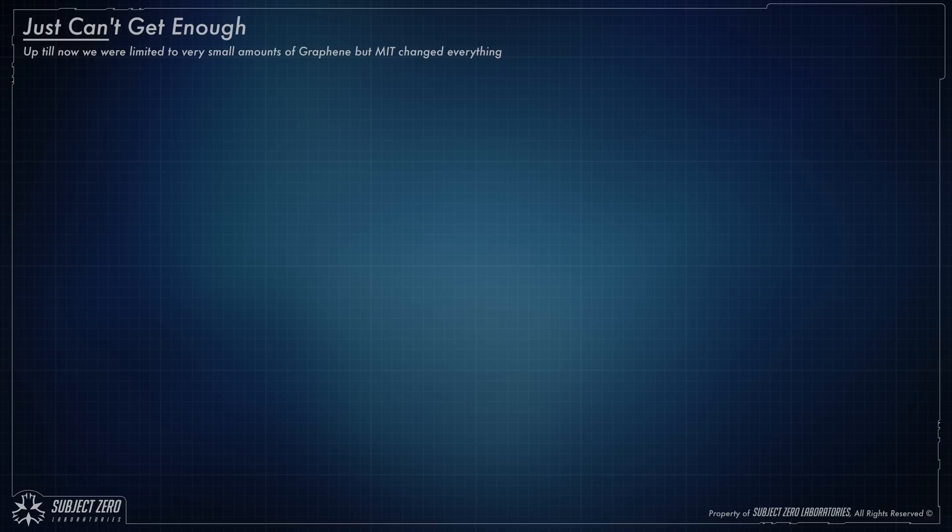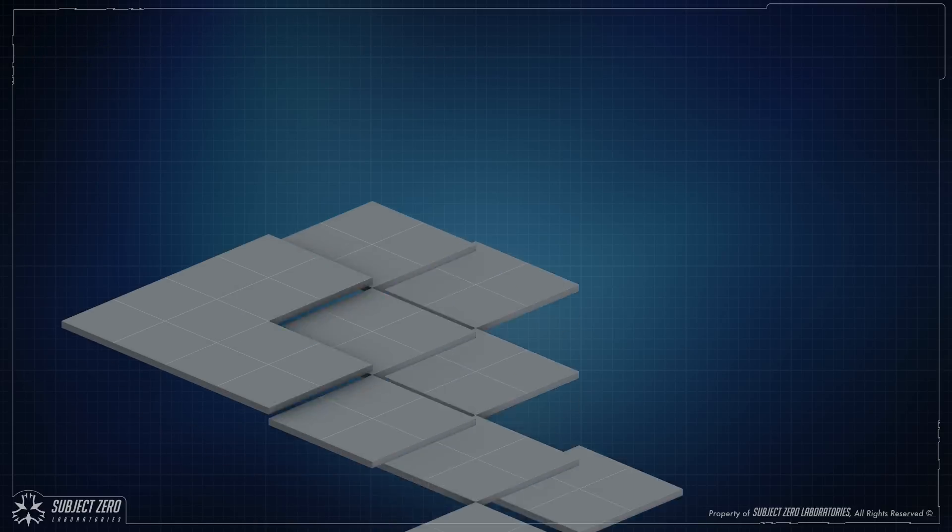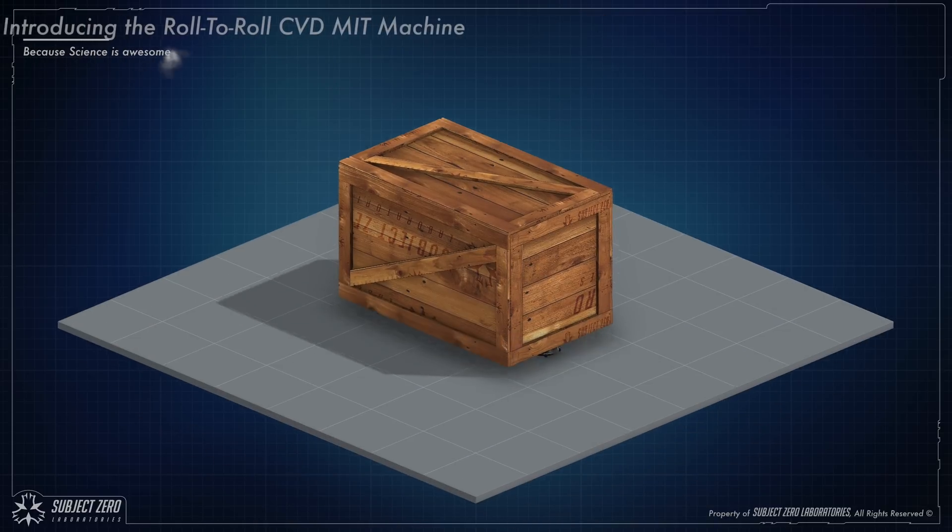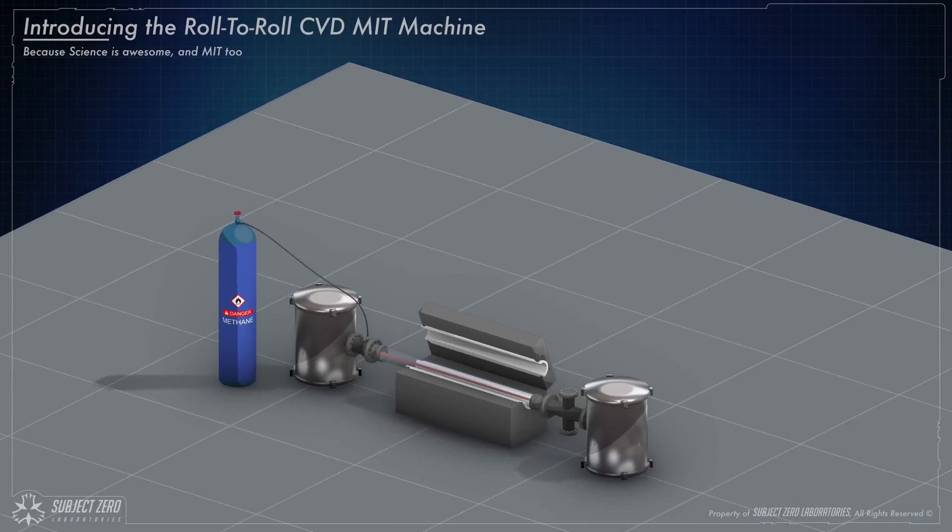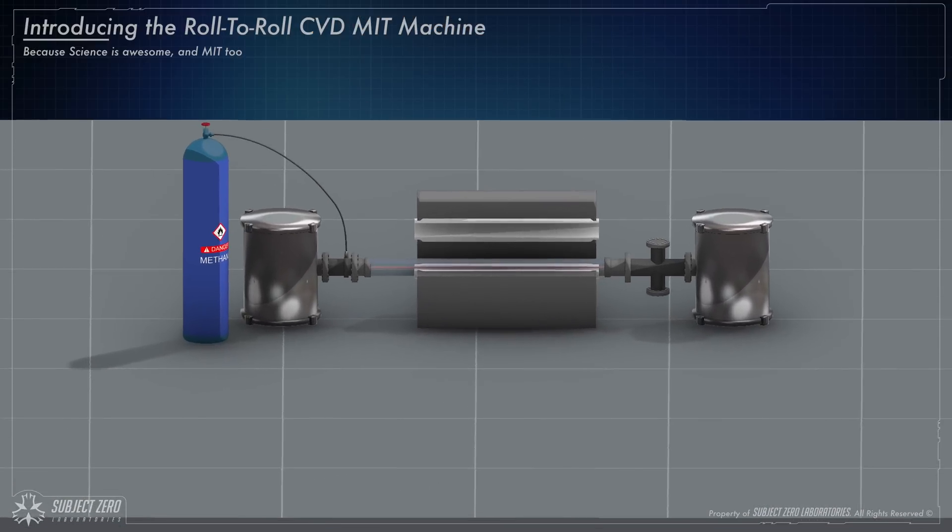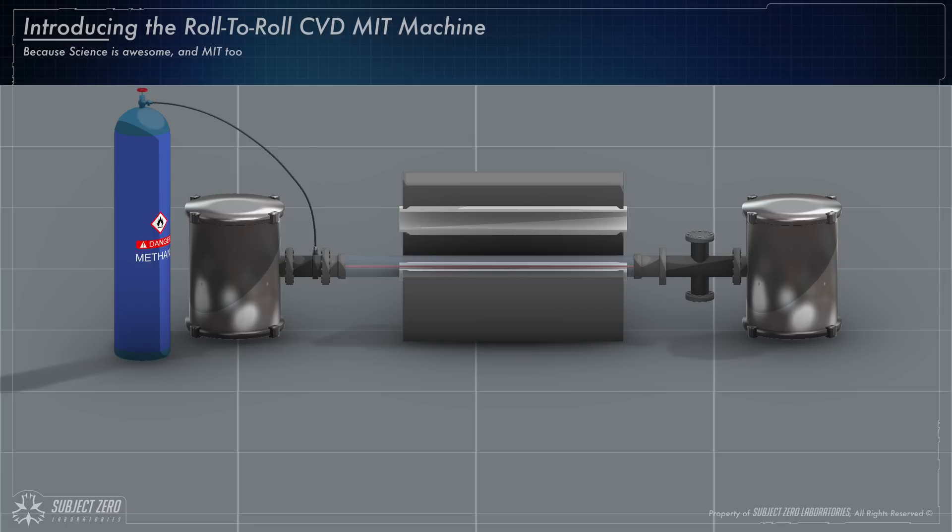Hence the roll-to-roll method that MIT developed. Ladies and gentlemen, I give to you the MIT roll-to-roll graphene chemical vapor deposit. Let's take a look at the machine.